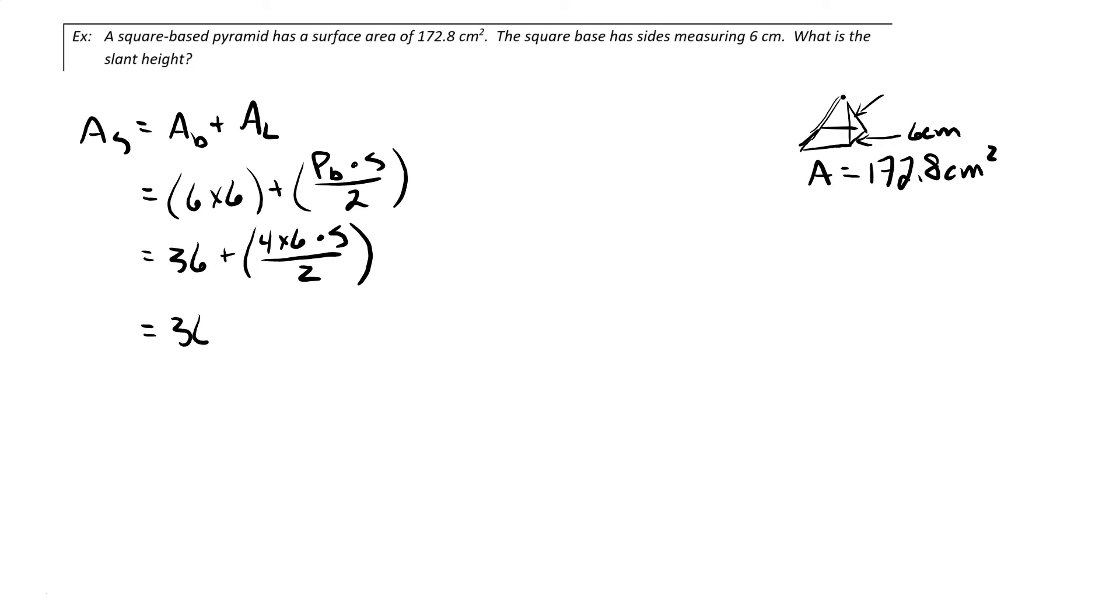Going one step further, I've got 36 plus 24s divided by 2, and that equals 172.8.